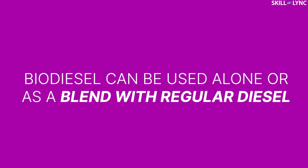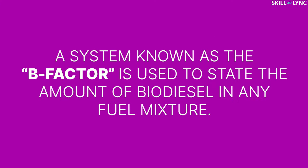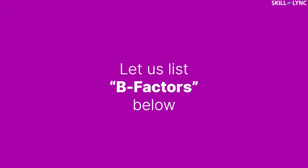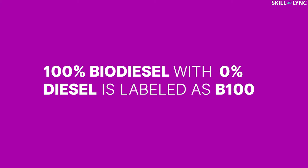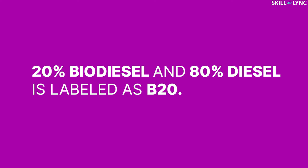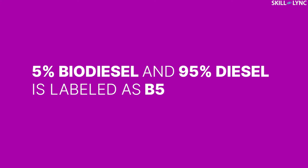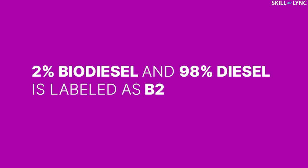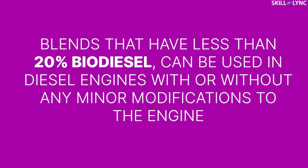Biodiesel can be used alone or as a blend with regular diesel. A system known as the B factor is used to state the amount of biodiesel in any fuel mixture. 100% biodiesel with 0% diesel is labeled as B100, whereas 20% biodiesel with 80% diesel is labeled as B20. Similarly, 5% biodiesel with 95% diesel is labeled as B5 and 2% biodiesel with 98% diesel is labeled as B2. Blends that have less than 20% biodiesel can be used in diesel engines with or without any minor modifications in the engine.